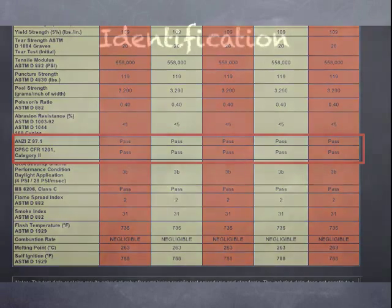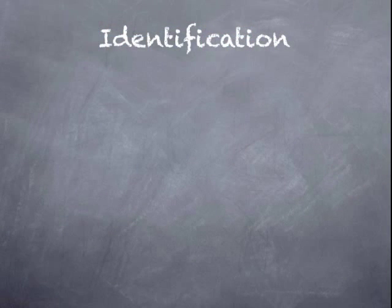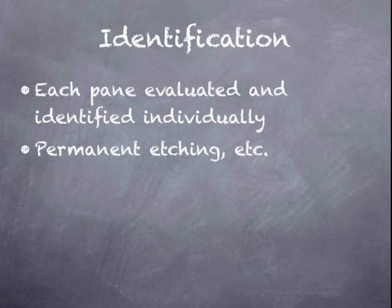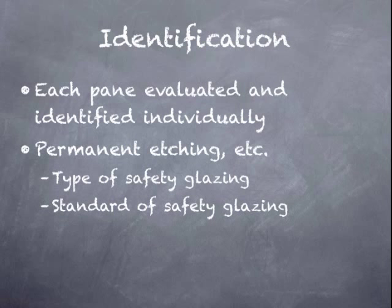But we've got to know that products are safety glazed — it's just clear glass unless there's some sort of identification. When evaluating glass, each pane of glass is evaluated and identified individually, not the entire window assembly, just each separate piece of glass. The glass has to have some sort of permanent identification, typically an etching, and one that can only be removed if destroyed, so that it can't be moved to another non-tempered piece of glass. The identification must state the type of safety glazing, like tempered, and it also must state the standard of safety glazing for which it complies.